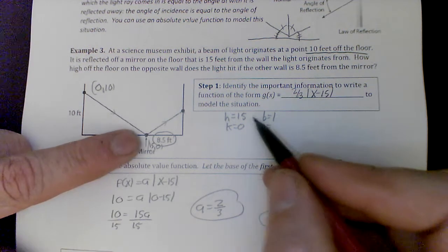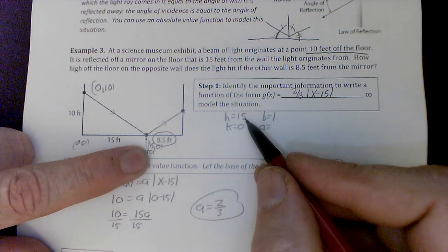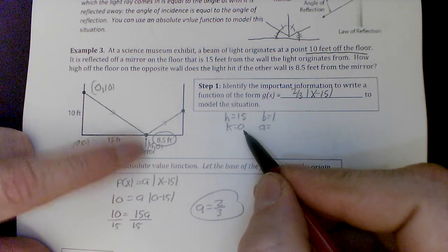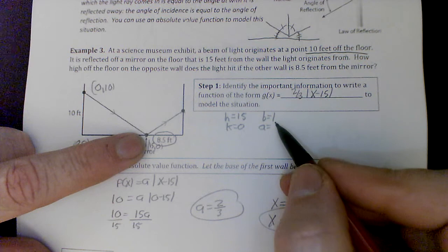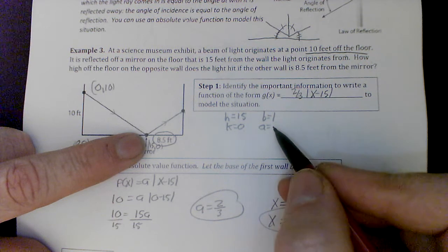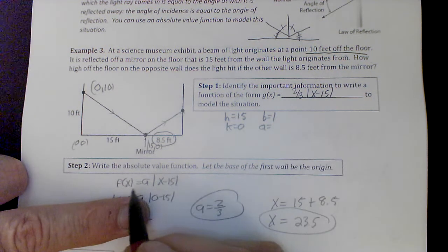So I started with my vertex, which gave me h, my x value of 15, k, my y value is 0. That's the vertex. Kind of nice to have it on the floor. I let b equal 1. I solve for a, which is this equation, if you remember what we've been doing.